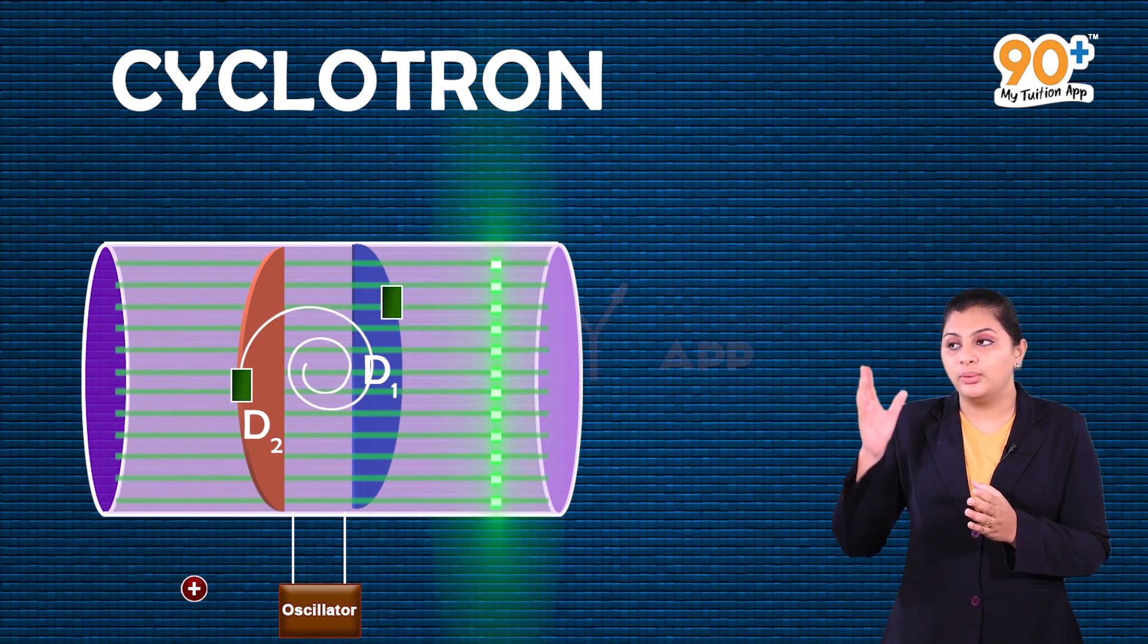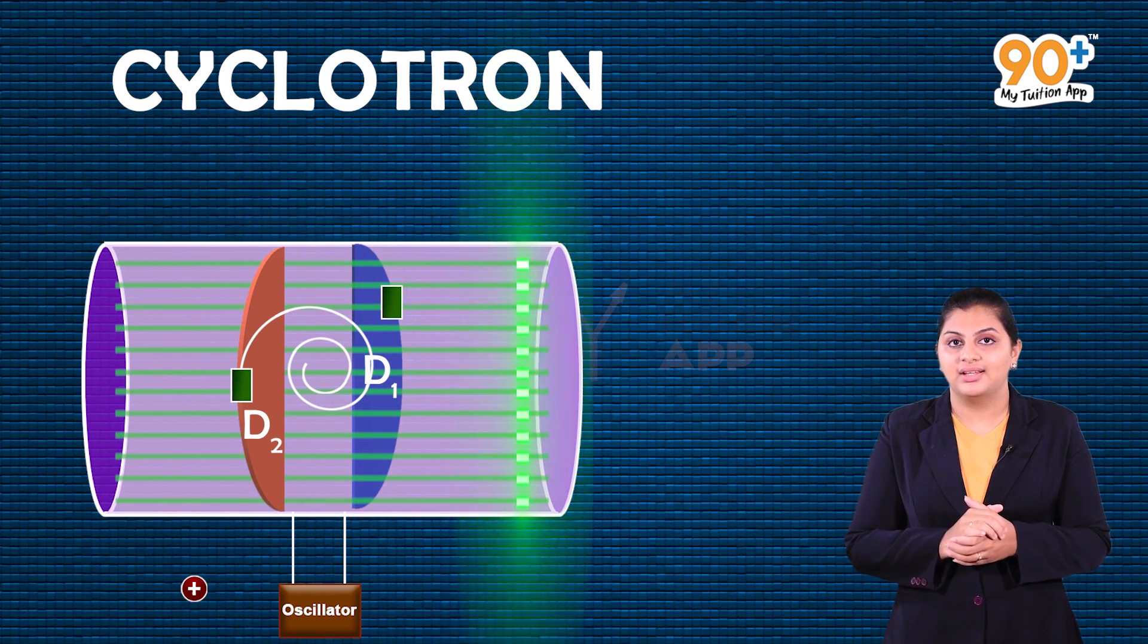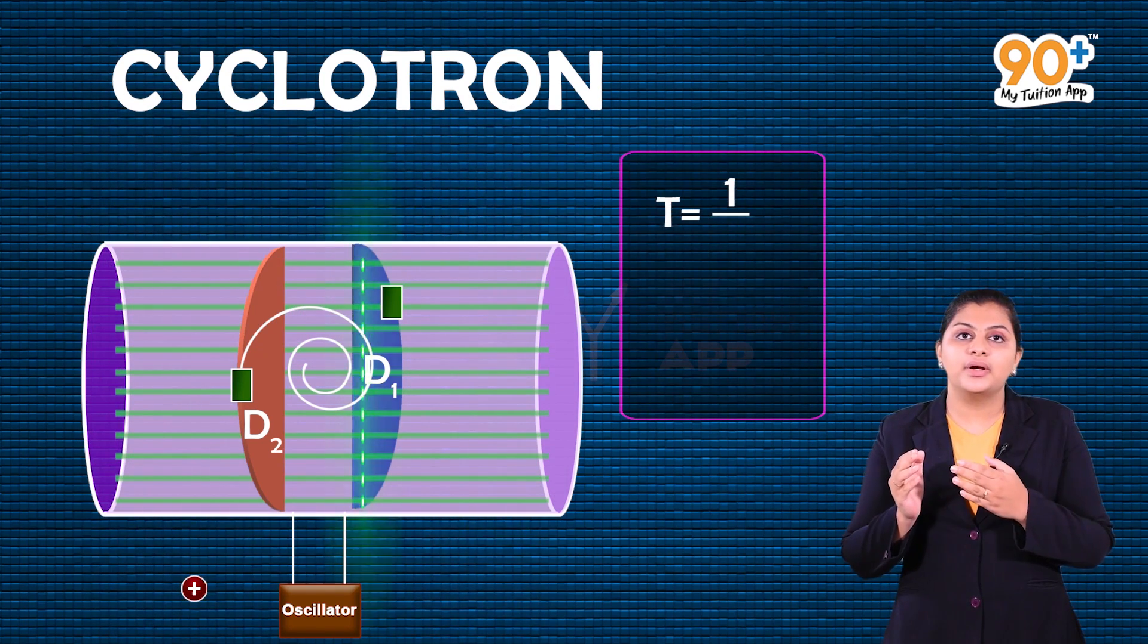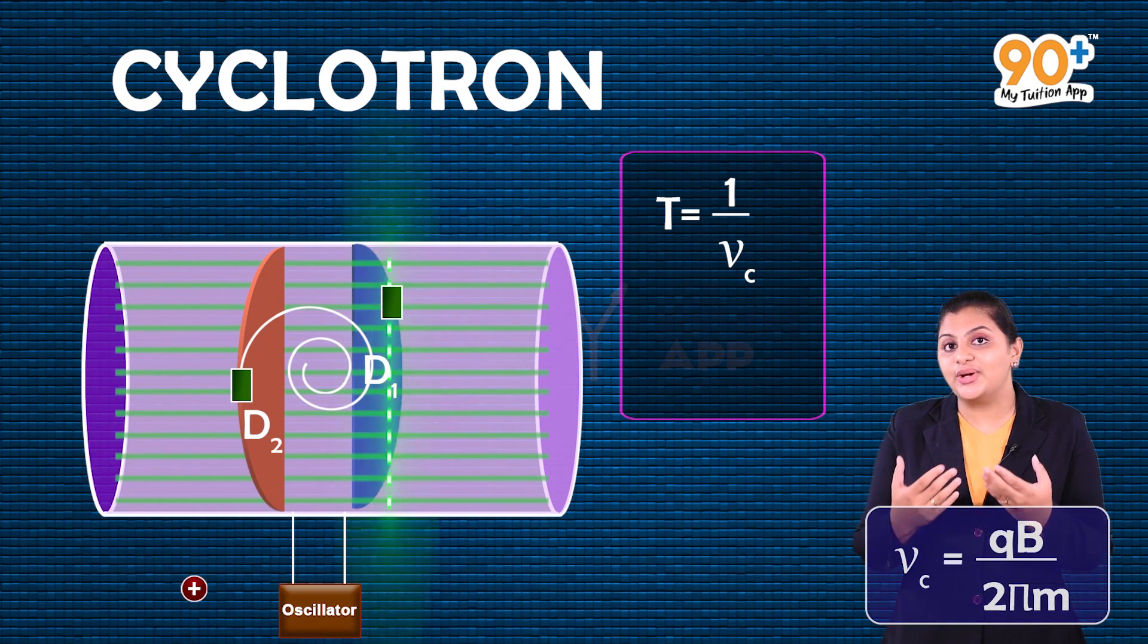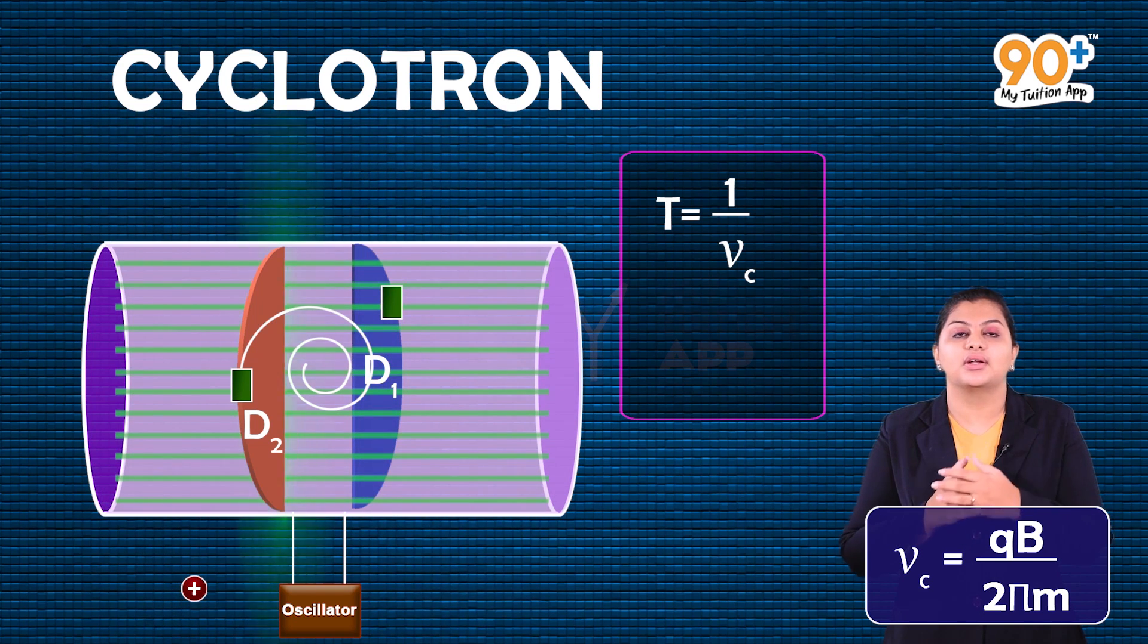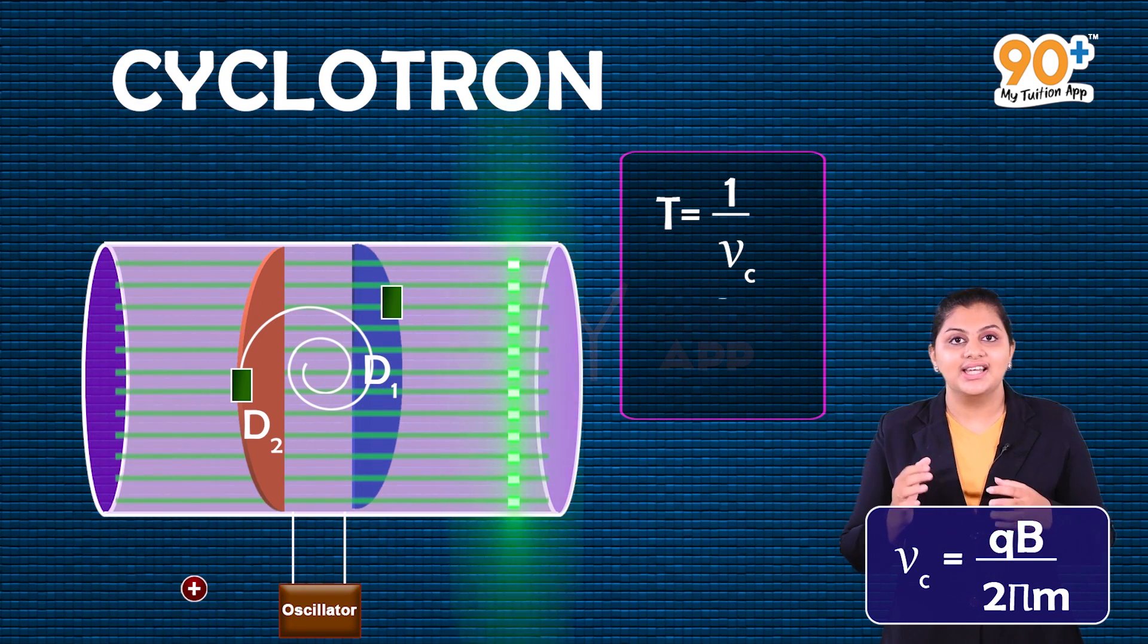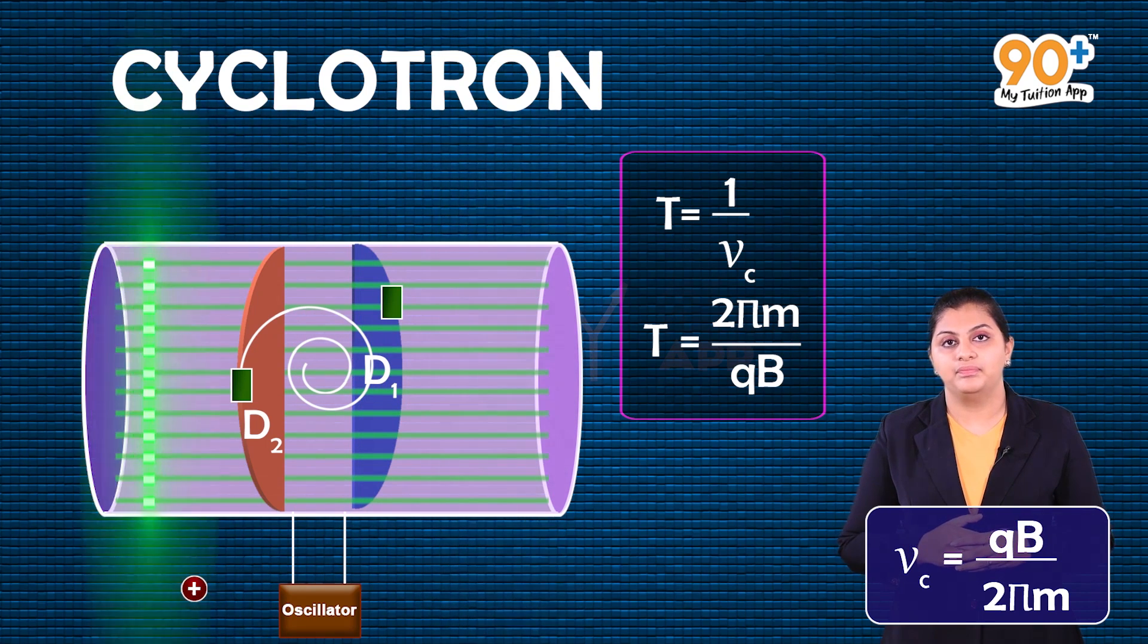The time period for one full revolution is t equals 1 by ν. Here ν is the cyclotron frequency, so the time period is the reciprocal of cyclotron frequency. That is, t equals 2πm divided by qB.